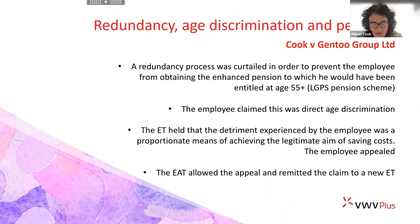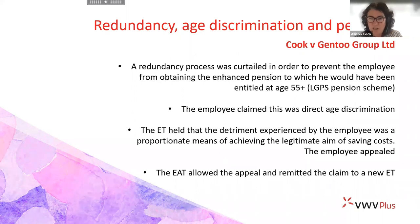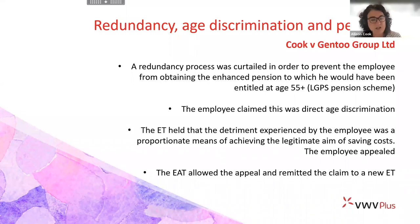Mr. Cook argued that had the redundancy not been curtailed, it would have taken effect after his 55th birthday, and in those circumstances the employer would have been obliged to make an £80,000 contribution into the pension scheme to cover the additional pension costs — known as a pension strain cost. Mr. Cook claimed he'd been unfairly dismissed and that the shortening of the redundancy process amounted to direct age discrimination.